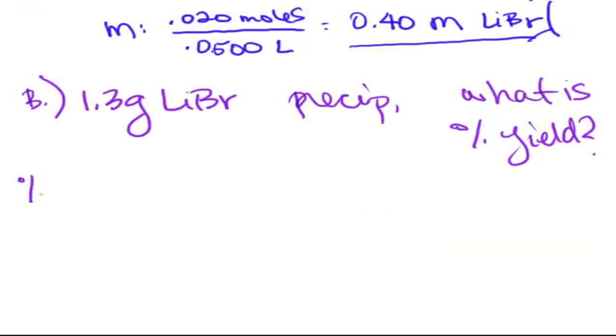and that is defined as the actual yield over the theoretical yield times 100%, and that will give you percent yield. And so these actual yields and theoretical yields, you can use two different forms. You can either use the actual and theoretical yield in moles or in grams, and so we're going to do it both ways.